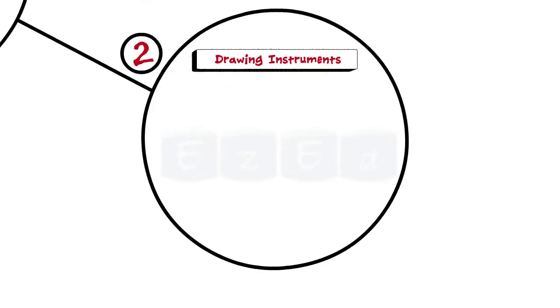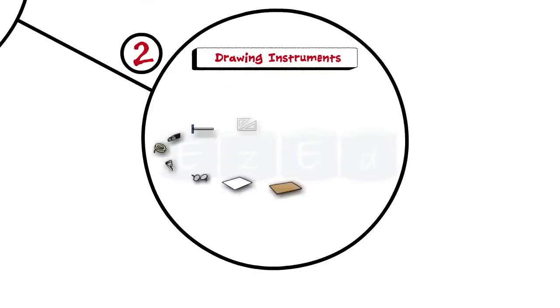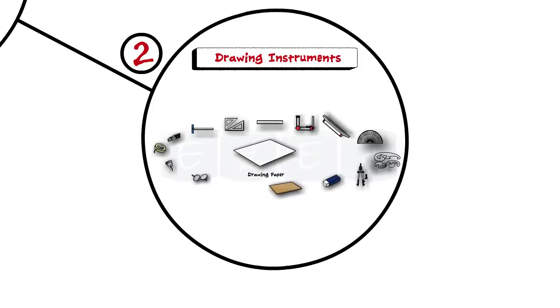Next we have seen different drawing instruments used in engineering drawing such as drawing board, drawing paper, pins, clips or adhesive tapes, pencils, T-square, set square, scale, drafter, roller scale, protractor, French curves, compass and eraser, and their uses.